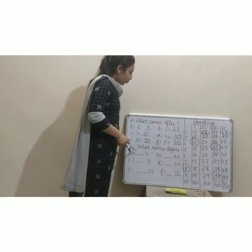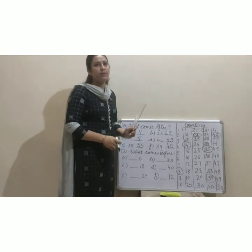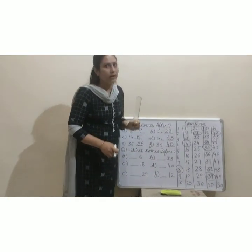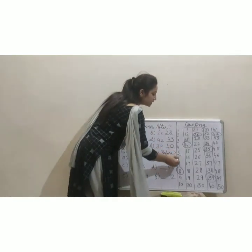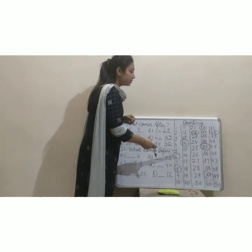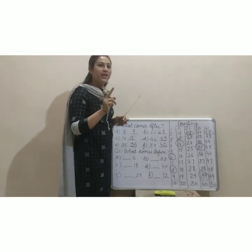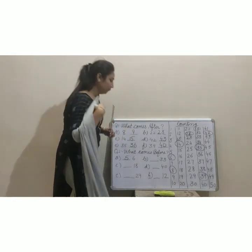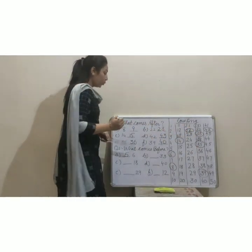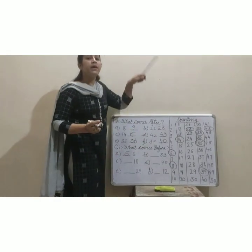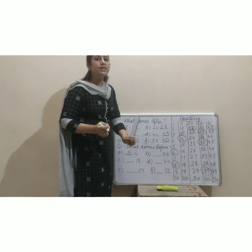What comes before? Means, the number that is given — you have to write the number that comes before it. First is 6. Where is 6? This one is 6. What comes before 6? 5 — very good, clap for yourself! Next is 33. This one is 33. What comes before 33? 32 — your answer is 32, write here 32.